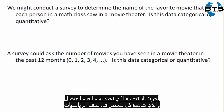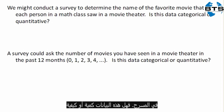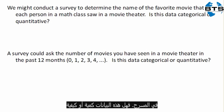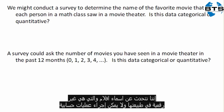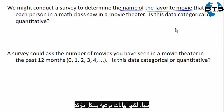We conduct a survey to determine the name of the favorite movie that each person in the math class last saw in a movie theater. Is this data categorical or quantitative? Well, we're talking about names of movies, and that is certainly not numeric in nature — we're certainly not going to be able to do any arithmetic with this. So this is definitely categorical.